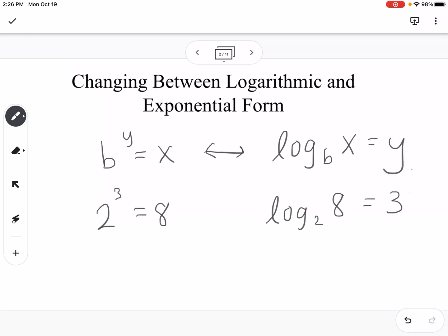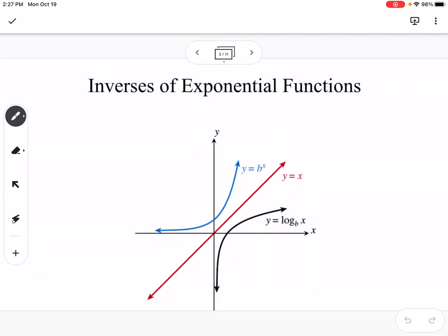You can go the reverse way as well. You might have a log equation that you can write as exponential. This will come in when we start to solve equations. It's helpful to switch between forms. Exponential functions and log functions are inverses of each other. So we have y equals b to the x, y equals log base b of x. You can see that they're reflected over the y equals x line because they are inverses.